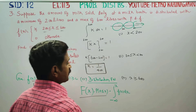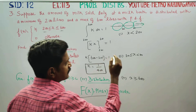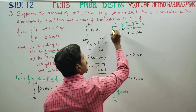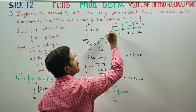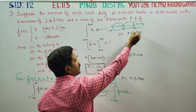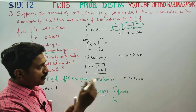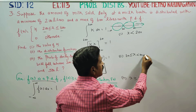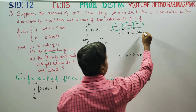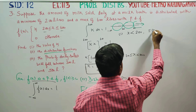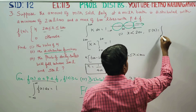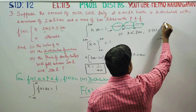Let's start computing. For the first interval, x less than 200, the lower limit is 200 and we integrate from minus infinity to x. The distribution function F(x) equals the integral from minus infinity to x of f(x) dx.